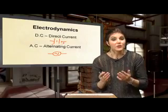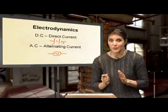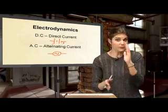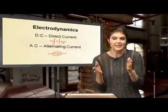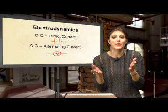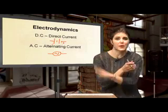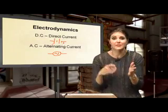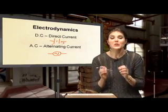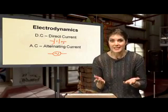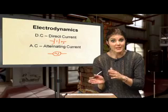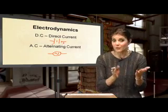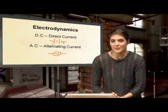Alternating current, on the other hand, is going to swap around. We're going to have positive and negative, and then suddenly it swaps to become negative-positive, and then positive-negative again. That's alternating current, and that's how it differs from direct current.